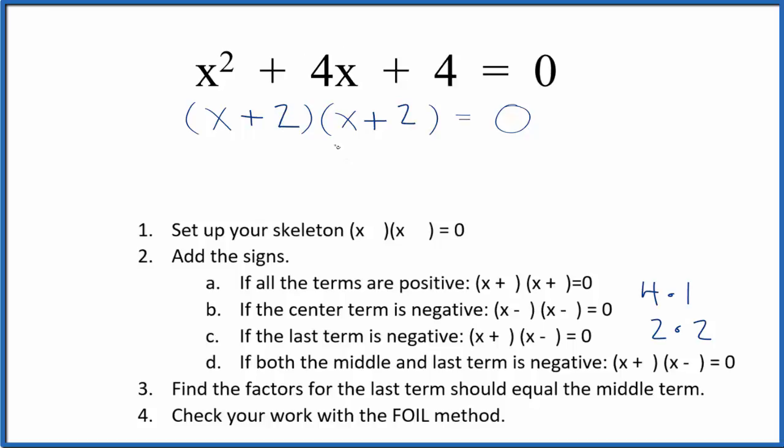Now we should check our work with the FOIL method. That'll look like this: we've multiplied the first terms, the outside terms, the inside terms, and then the last terms. We can take the 2x plus 2x and make that 4x. X squared plus 4x plus 4 equals 0—that's the same thing as we have up here, so we know we did this correctly.